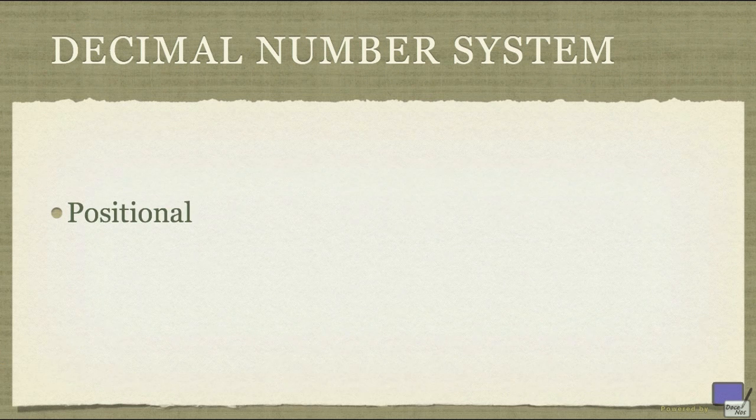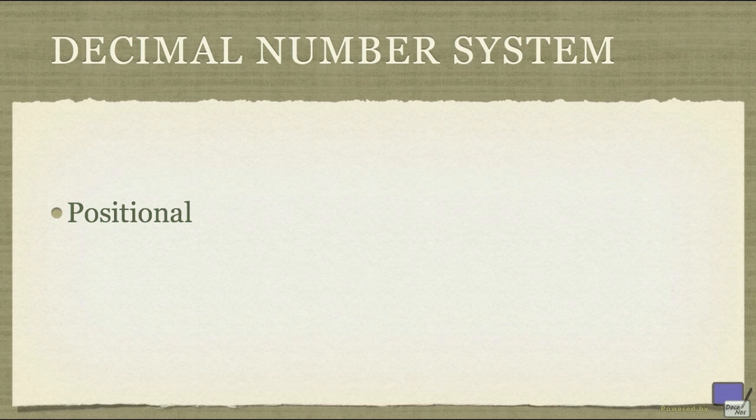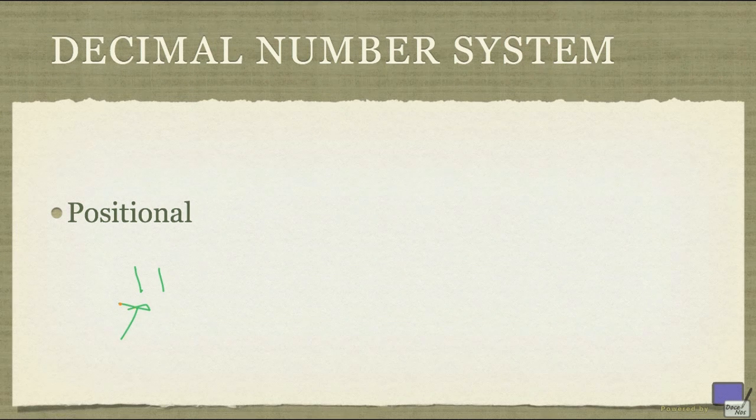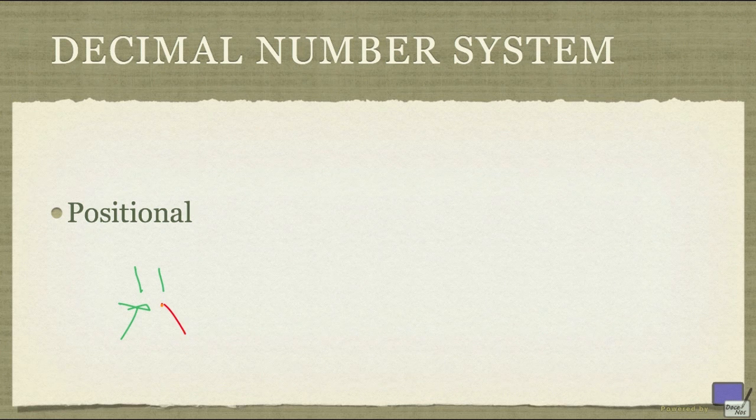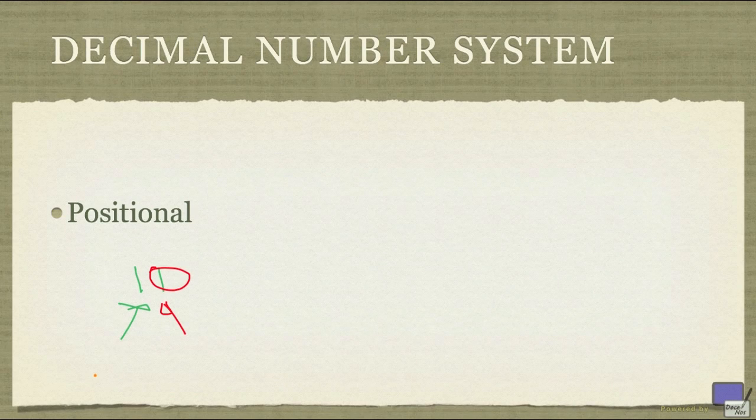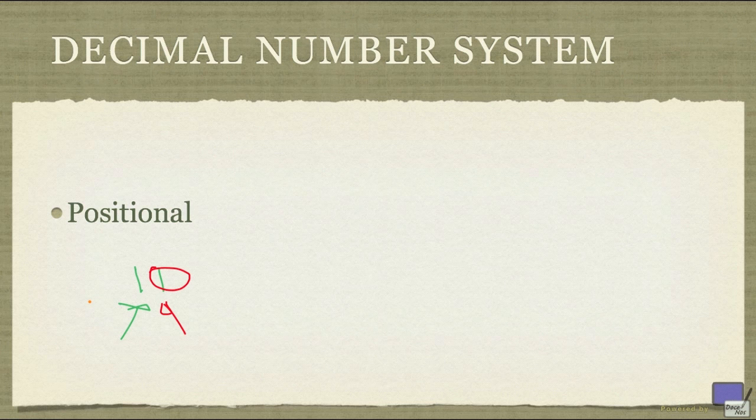This system is positional, in the sense that if you look at the string, this one on the left does not carry the same meaning as this one on the right. This is in fact potentially confusing, and that is why it takes a while for young children to learn the system.